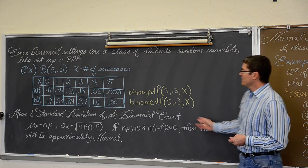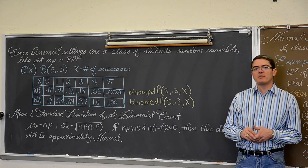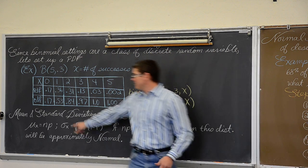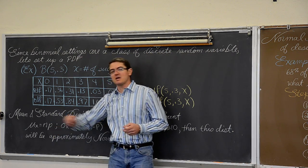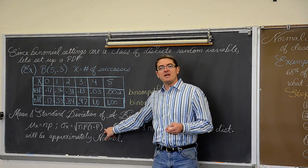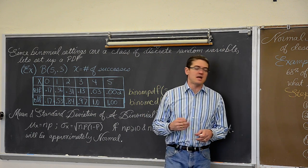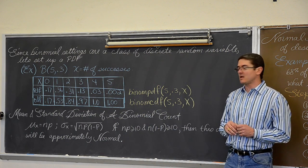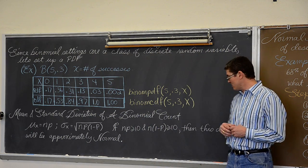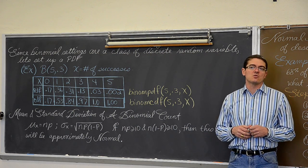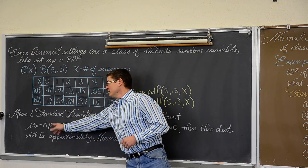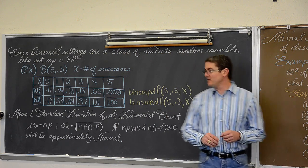So how do we find the mean and standard deviation of a binomial count? Well, the mean of this binomial count is n times p, and standard deviation is the square root of n times p times one minus p. And if you are taking an AP stats class, and you are going to take that test at the end of the year to try and get some college credit, these two formulas are on that formula sheet when you take the exam.